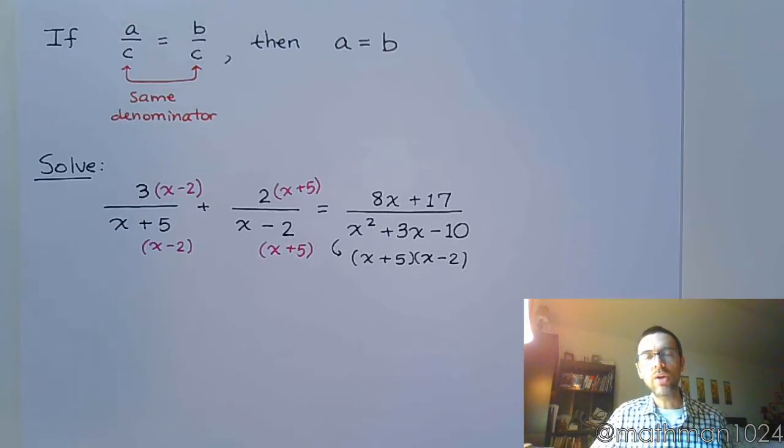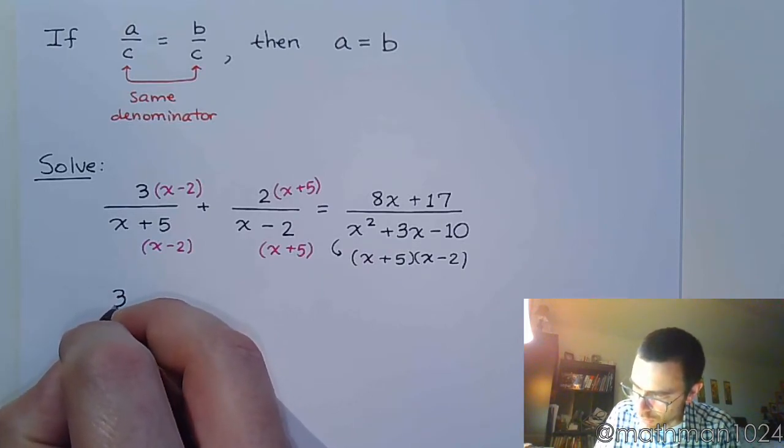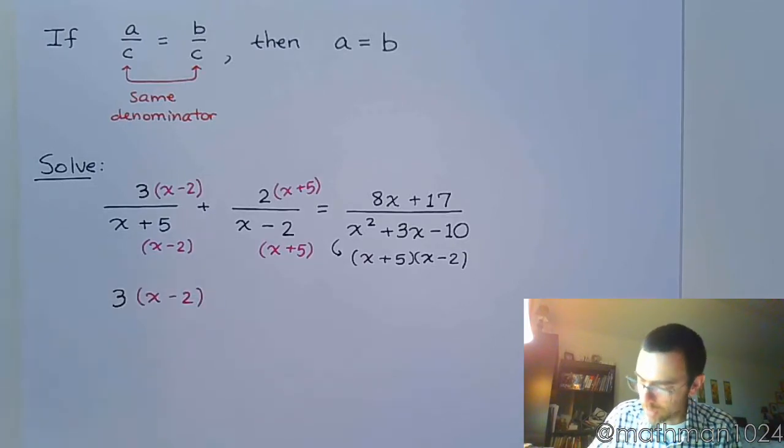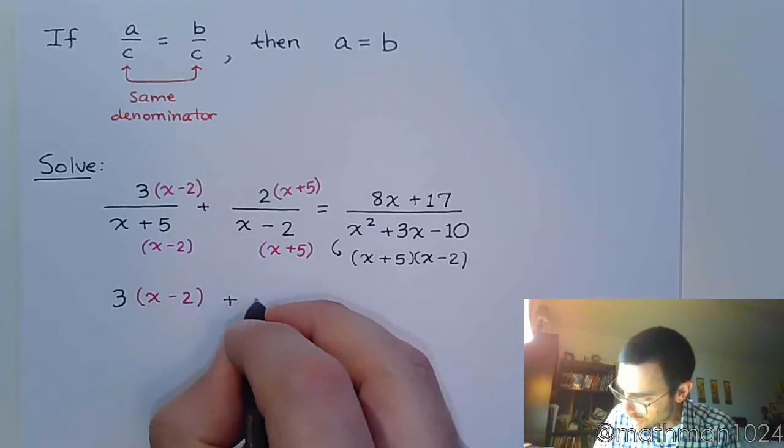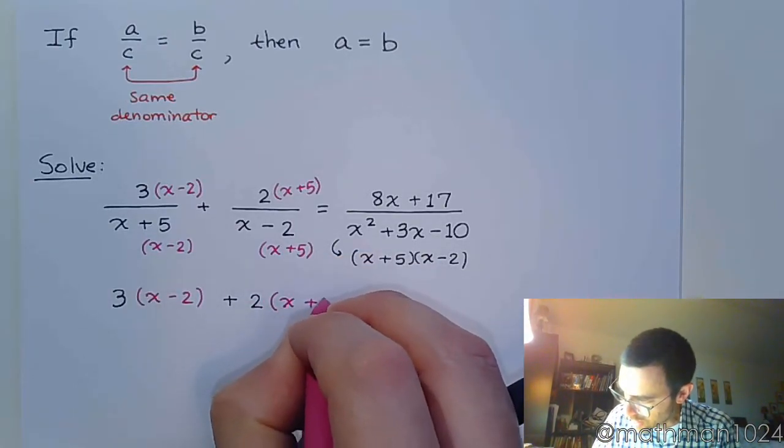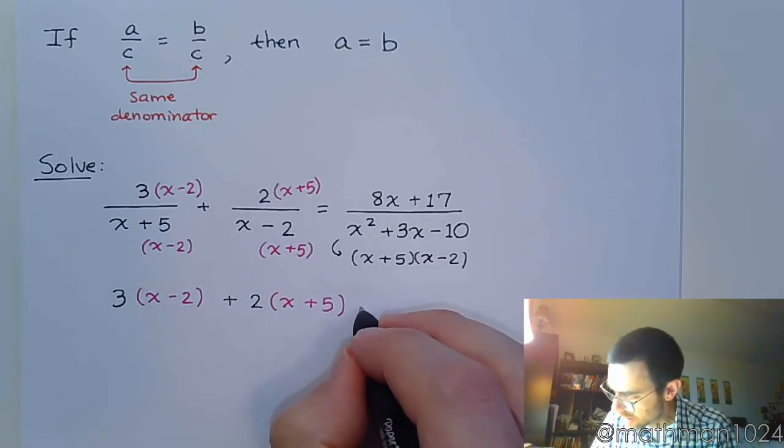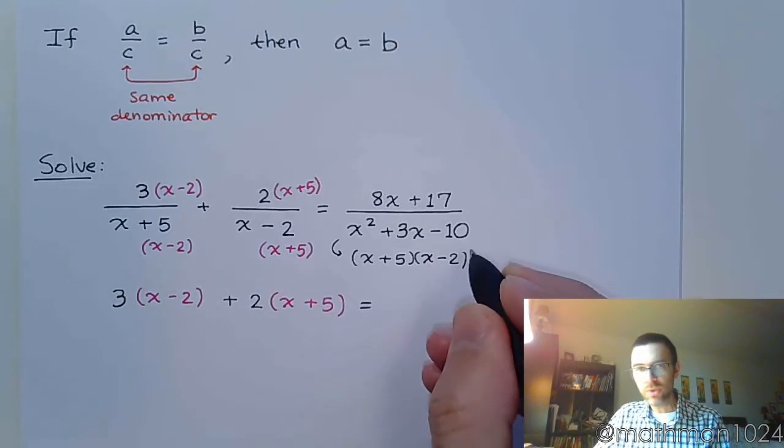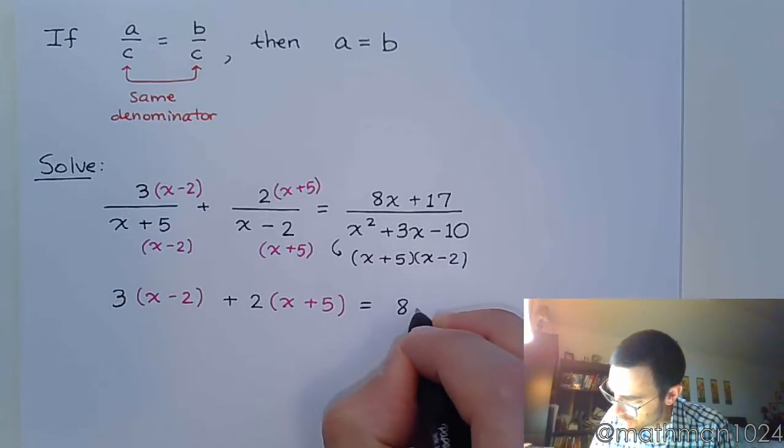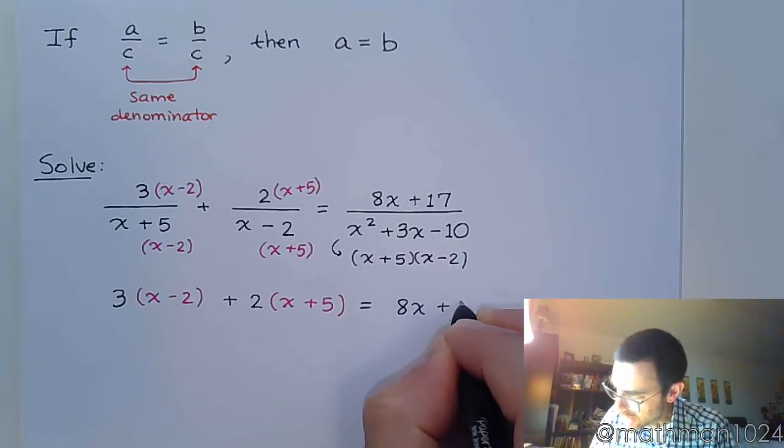So we can now rewrite our equation based strictly on those numerators. Now here's what I want you to do. I want you to stay on the straight and narrow path, and I want you to rewrite this before you multiply. So 3 times x minus 2 plus 2 times x plus 5 is equal to... Now notice over here, there weren't any factors that were missing. So I can just copy down that numerator, 8x plus 17.